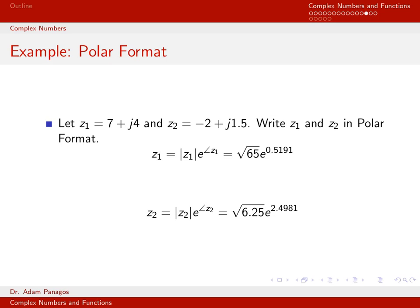Let's write these complex numbers in polar format. Polar format expresses a complex number as its magnitude times e raised to j times its phase. We computed the magnitude of z1 as the square root of 65 and its angle as 0.5191. So z1 can be written as square root of 65 times e to the j0.5191. Similarly, z2 in polar format is square root of 6.25 times e to the j2.4981.